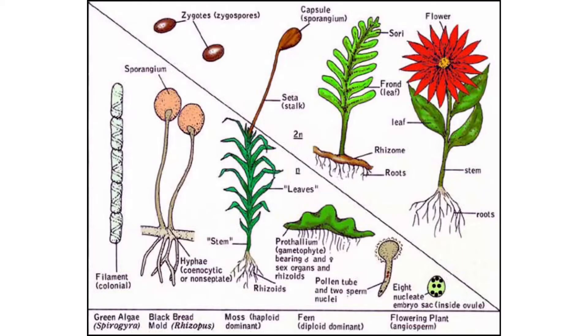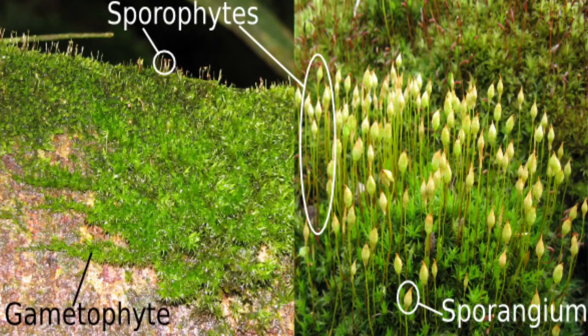In the fern life cycle, a spore grows into a gamotype. The gamotype then produces eggs and sperm cells. After fertilization, the fertilized egg develops into a sporotype. The sporotype produces spores.